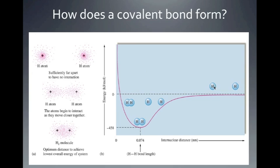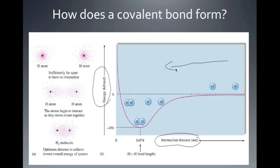We're going to use the example of hydrogen bonding to another hydrogen. This is one of our diatomic elements. On this graph, we have energy on one axis and distance on the other. Looking at the graph, as the hydrogens get closer together, we see that the potential energy decreases.